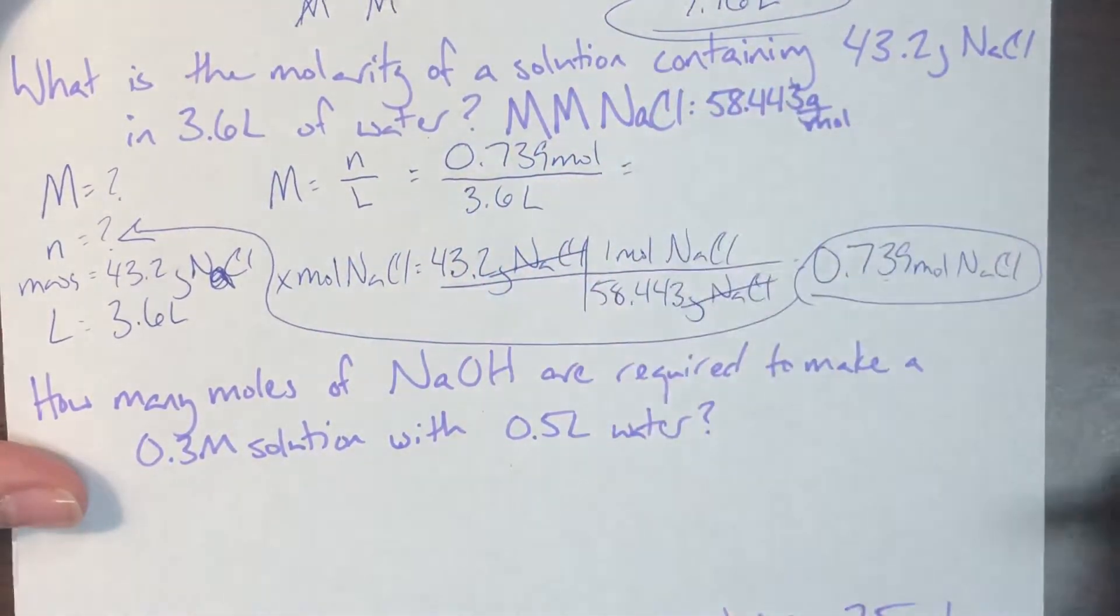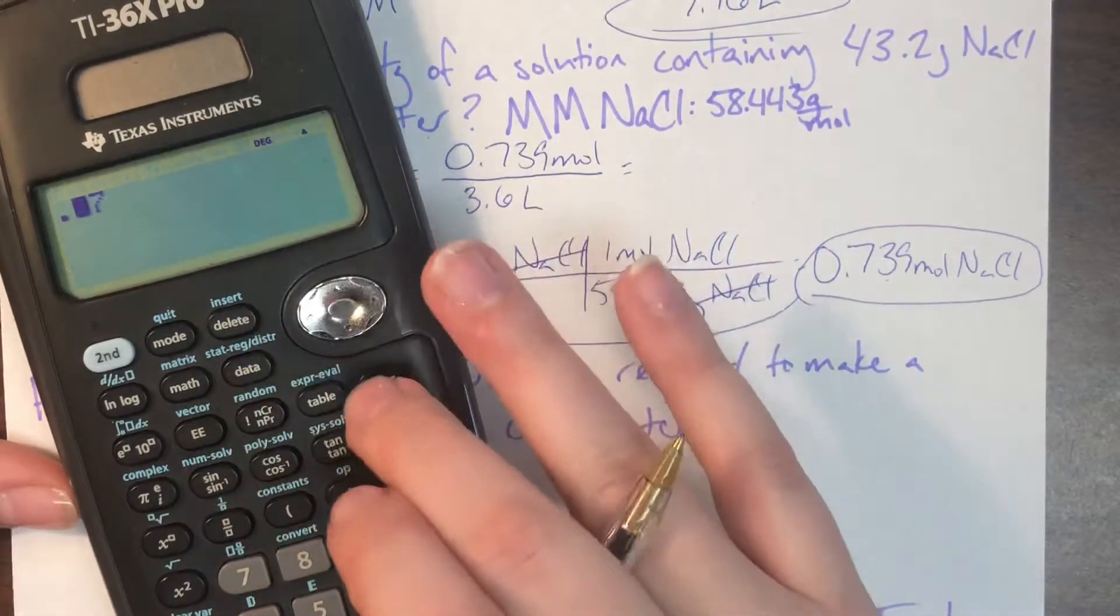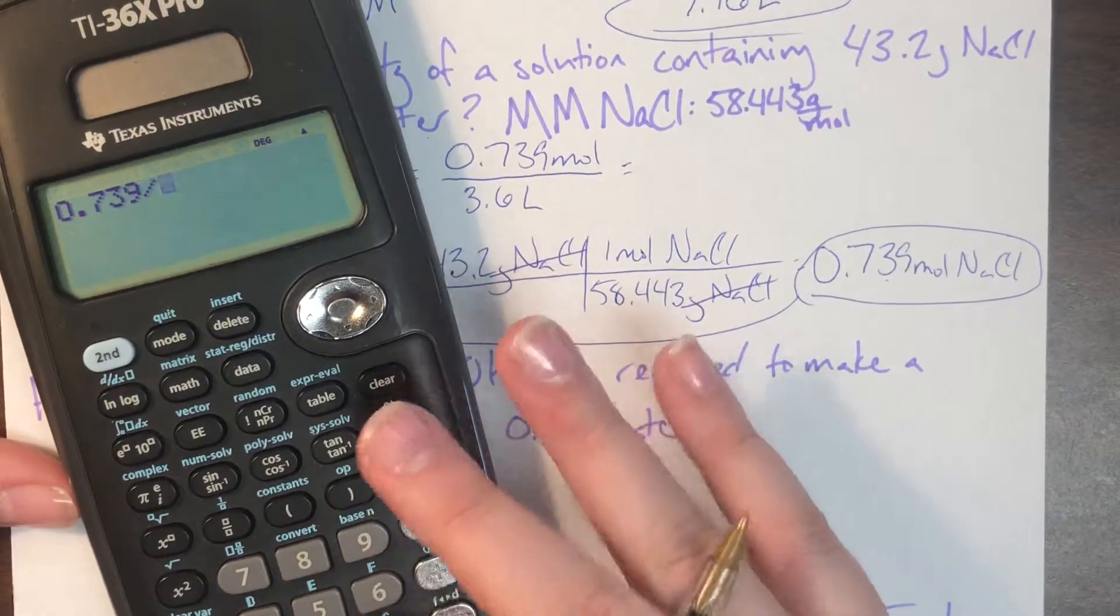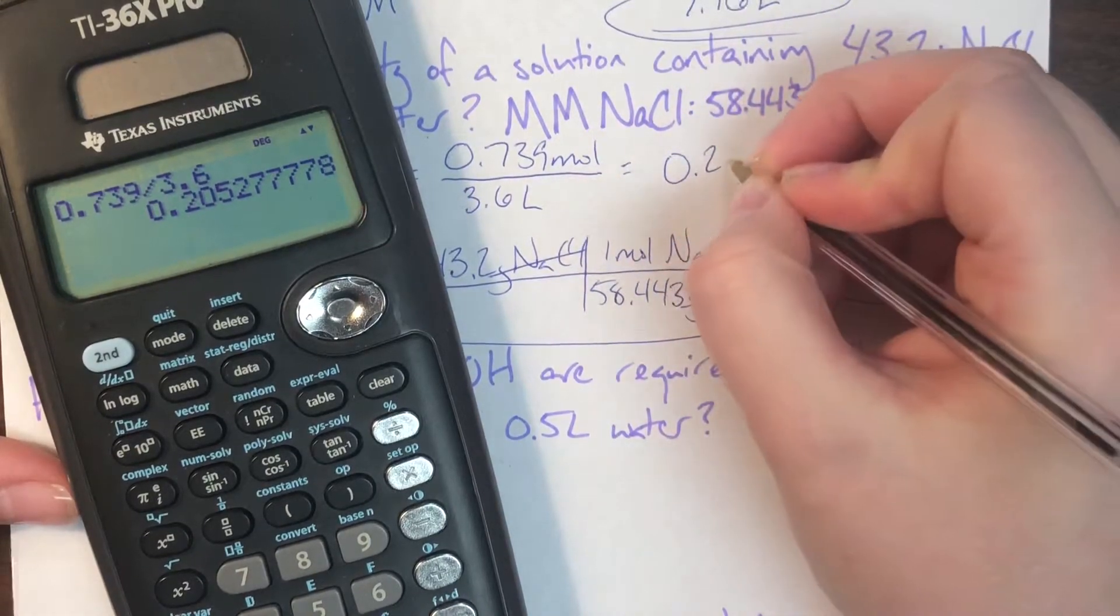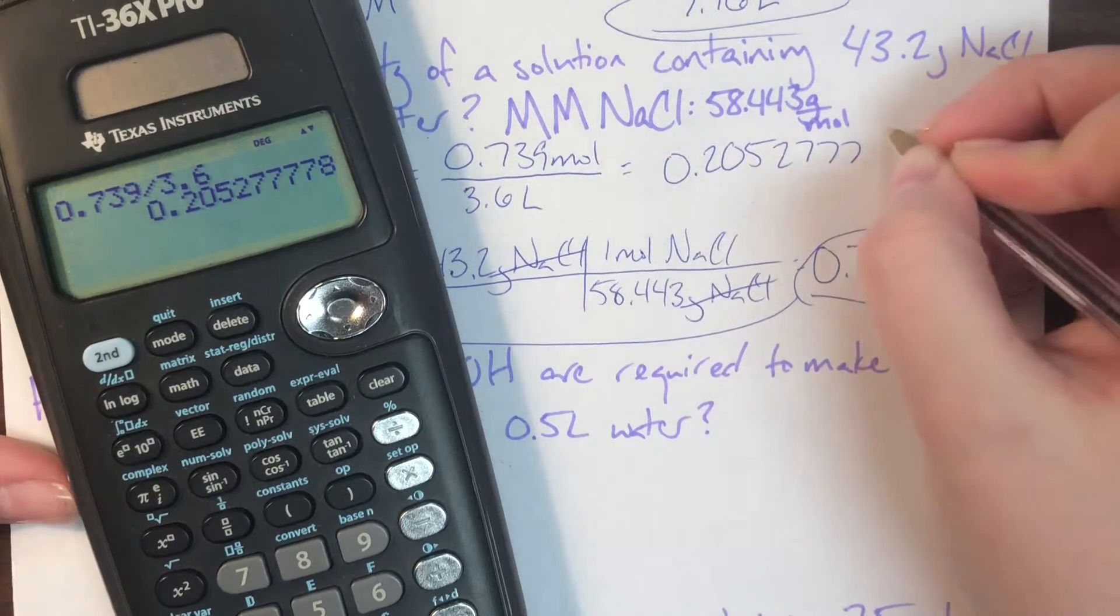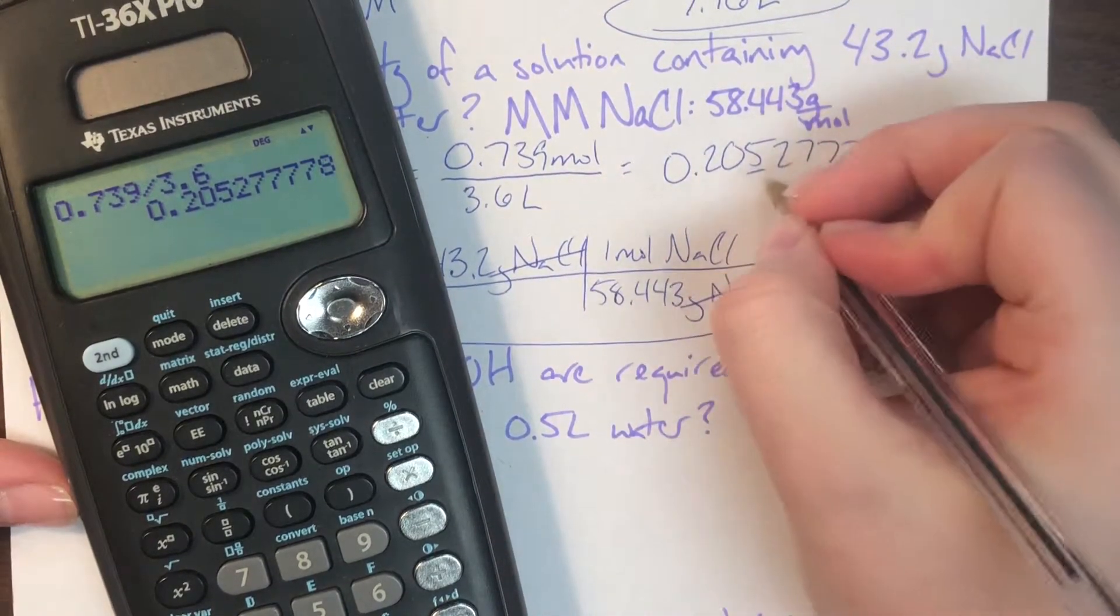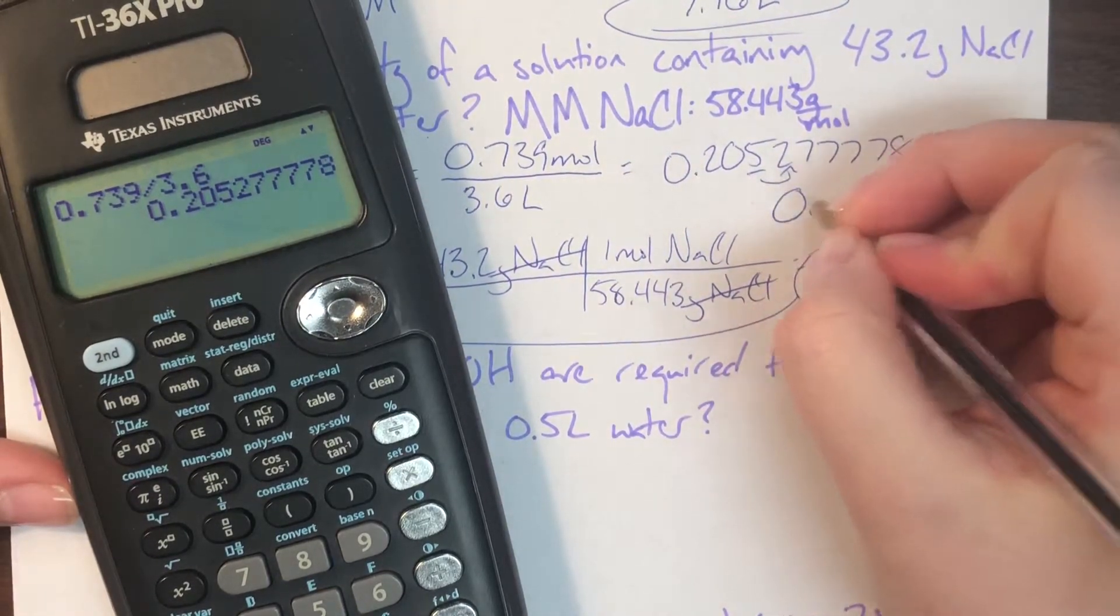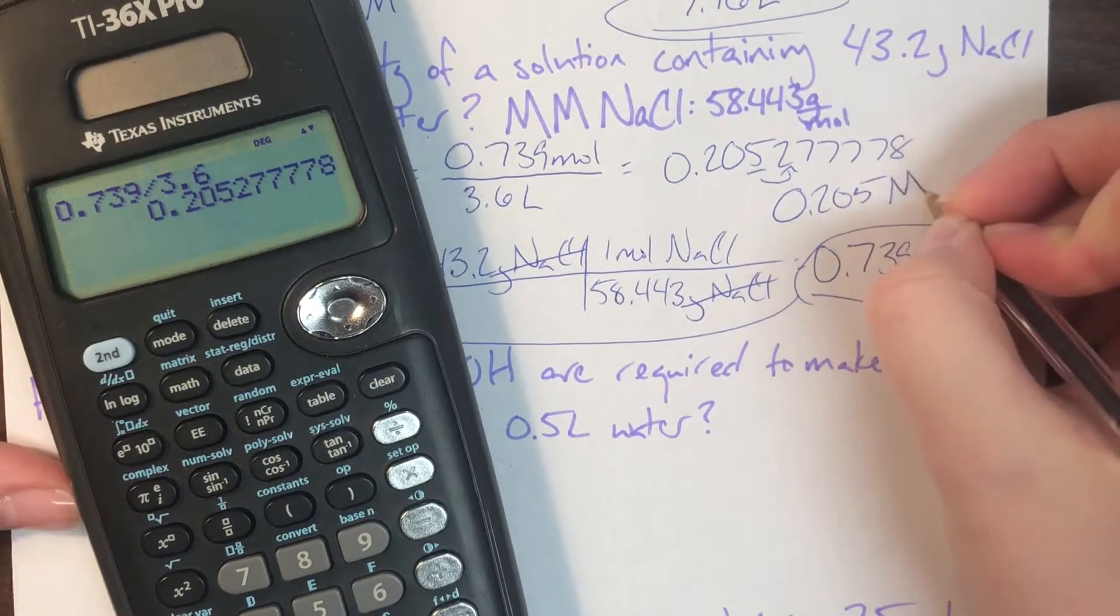And whenever I plug that into the calculator, 0.739 divided by 3.6, I get the molarity of 0.205277778. I'll keep it at 3 decimals. 2 doesn't make me round up, so that means my final box answer would be 0.205 molar.